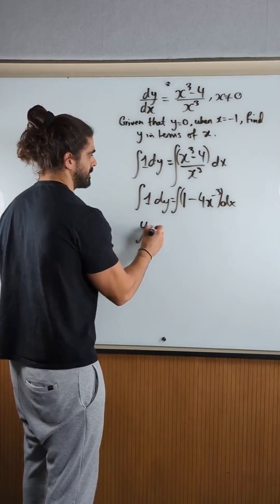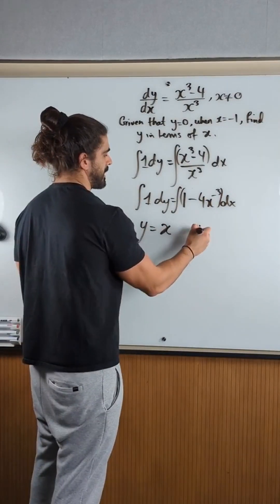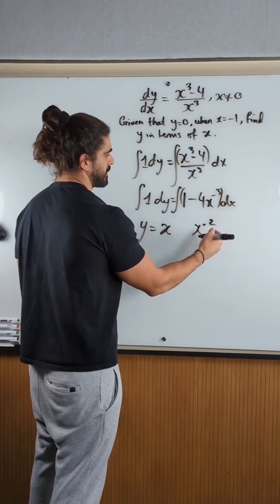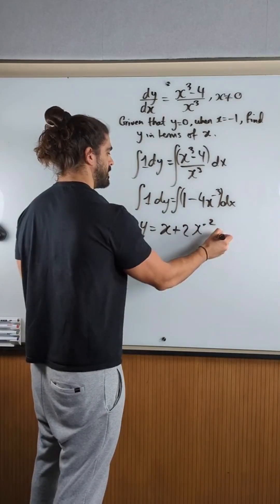Okay, integrating we get y. Here, integrating that you get x. Add 1 to the power minus 4 divided by minus 2 is plus 2, plus c.